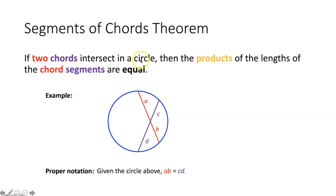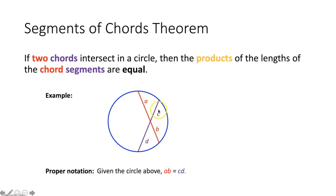What this theorem is saying is that if I were to multiply the lengths of the two segments of one of the chords — so A times B — that would equal the product of the lengths of the other two chord segments, C times D. If you have two chords that intersect in a circle, the lengths of the two segments created by each chord multiply together to equal one another.